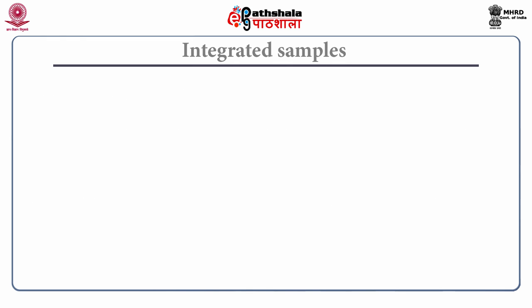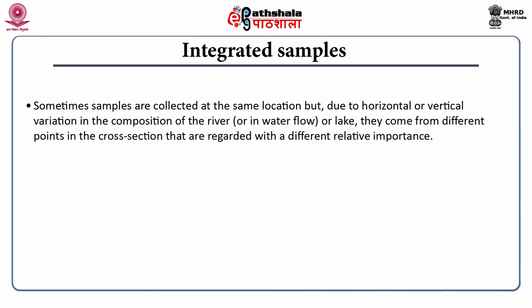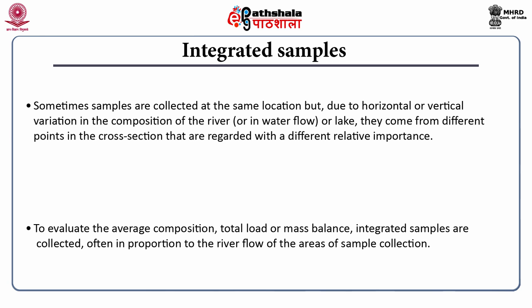A composite sample provides more meaningful data than a grab sample. The third type is integrated sampling. Samples are collected at the same location but due to horizontal or vertical variation in the composition of the river or lake, they come from different points in the cross-section that are regarded with different relative importance. To evaluate the average composition, total load or mass balance, integrated samples are collected often in proportion to the river flow or the area of sample collection.